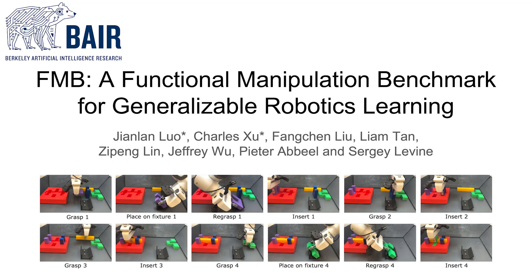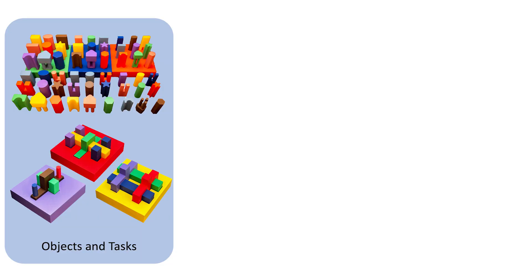In this video, we introduce FMB, a functional manipulation benchmark for generalizable robotic learning. Our benchmark consists of a variety of 3D printed objects and tasks that require a series of grasping, reorientation, and insertion skills.